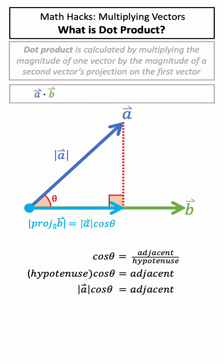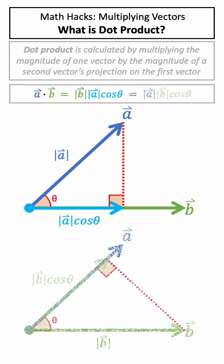By multiplying the magnitude of the projection by the magnitude of vector B, we get the formula for dot product. We can get the same expression by instead using the projection of B on A and multiplying this by the magnitude of A.